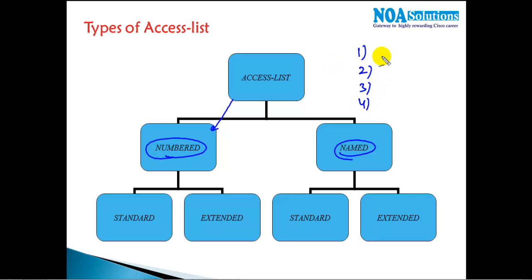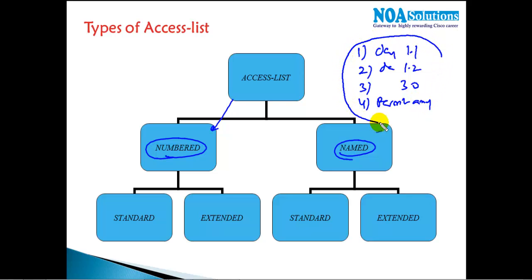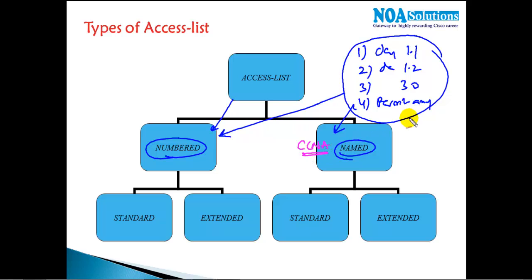Whatever rules we write — deny 1.1, deny 1.2, deny 3.0 network, permit all remaining — these rules can be identified by a name or a number. I can give a name like 'CCNA' to identify the ACL on the router, or I can use a number like ACL 10.